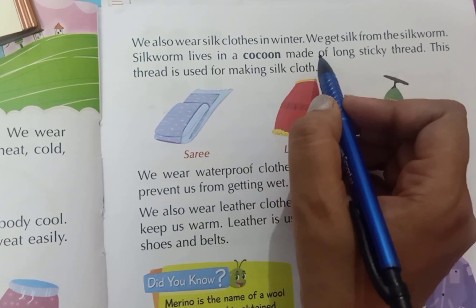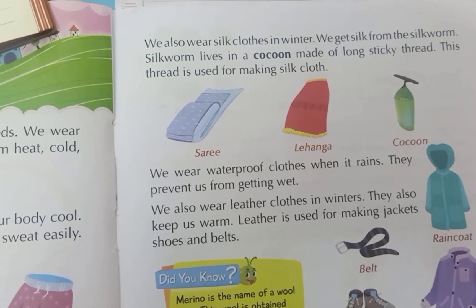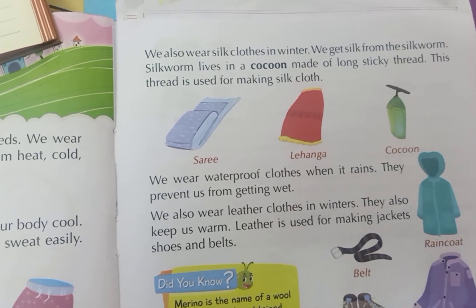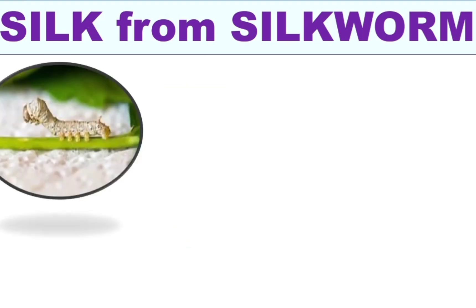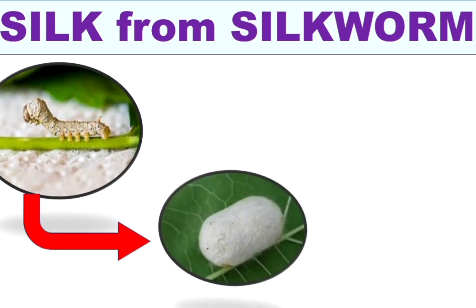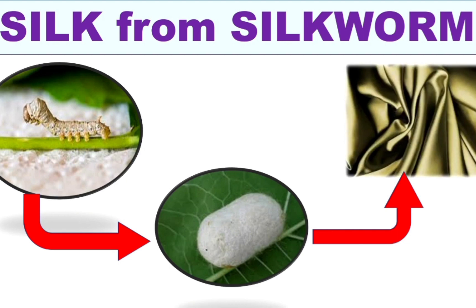Silkworms feed on mulberry leaves from mulberry trees. Silk is a secretion from the mouth of the worm, and it wraps around the body of the worm — that is known as a cocoon. From this cocoon we get a fine thread, and finally we get silk cloth.